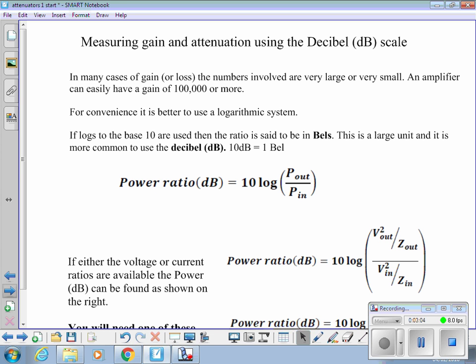Then the ratio is said to be in bels. A bell is quite a large unit in size, and so we more commonly use the unit of decibels where 10 decibels is equal to 1 bel.